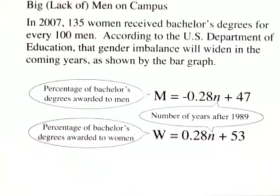Big lack of men on campus. In 2007, 135 women received bachelor's degrees for every 100 men. According to the U.S. Department of Education, that gender imbalance will widen in the coming years, as shown by the bar graph.